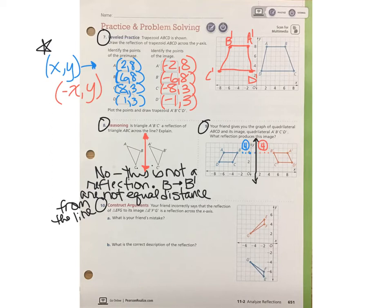Your friend gives you the graph of quadrilateral A, B, C, D, and its image quadrilateral A prime, B prime, C prime, D prime. What reflection produces this image?